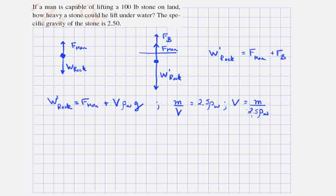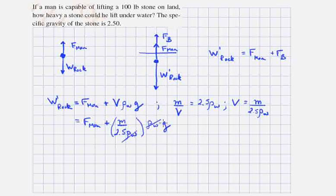If I substitute this V into this V on the right side of my formula, I get F man plus M over 2.5 rho sub W times rho sub W times G. The rho W's cancel. M times G is just W prime, so that equals F man plus W prime rock over 2.5.